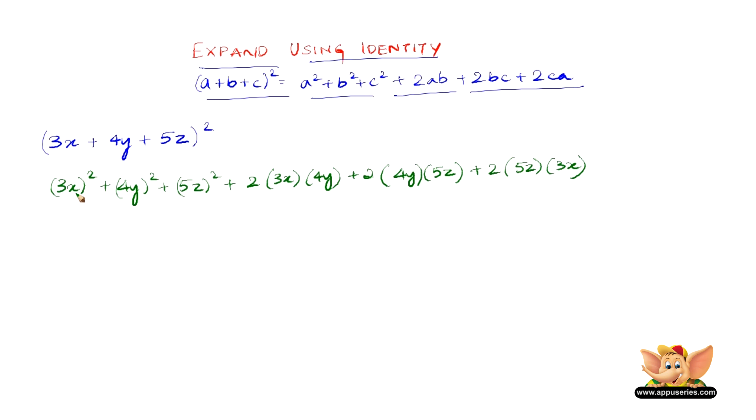So all we need to do is just expand this. 3x the whole square is 9x square plus 4y the whole square is 16y square plus 5z the whole square is 25z square plus 2 into 3x is 6x, 6x into 4y is 24xy plus 2 into 4y is 8y, 8y into 5z is 40yz plus 2 into 5z is 10z, 10z into 3x is 30zx. So therefore 9x square plus 16y square plus 25z square plus 24xy plus 40yz plus 30zx is the expansion of 3x plus 4y plus 5z the whole square.